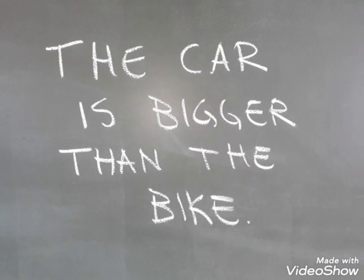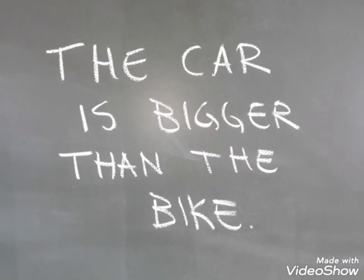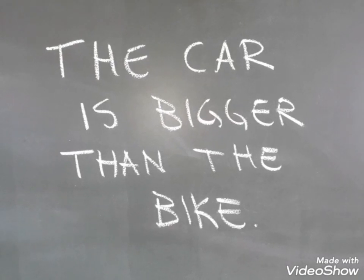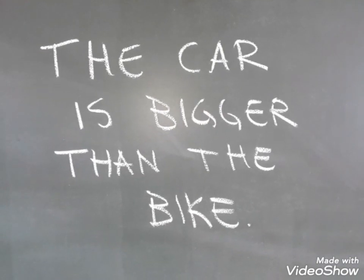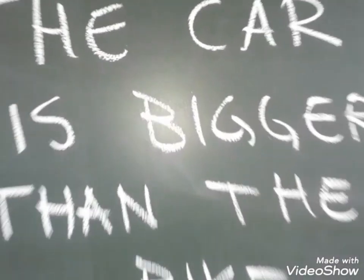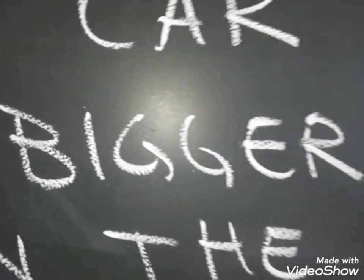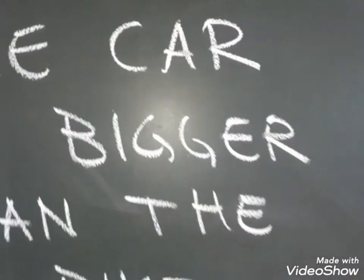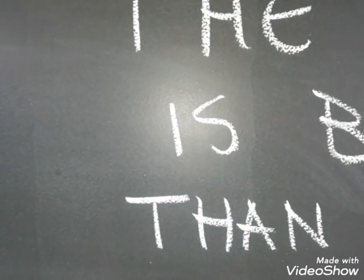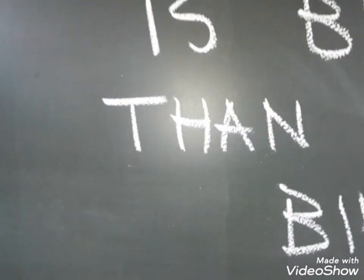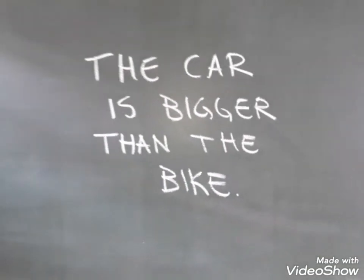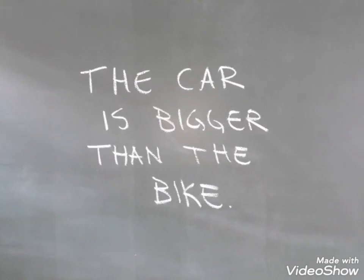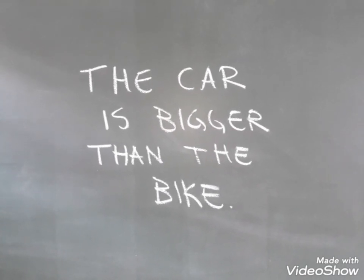Quem de vocês já falou 'é mais grande'? Então, pessoal, assim como no português, em inglês também temos alguns adjetivos irregulares — mais menor, mais melhor. Existe isso? Em inglês, big é a palavra grande. Bigger than quer dizer maior que. Então, a gente traduz bem pela letra. O carro é maior que a bicicleta: the car is bigger than the bike.